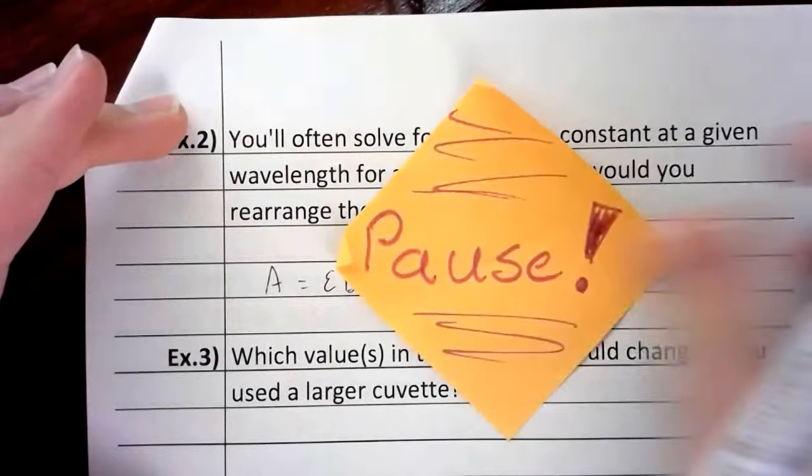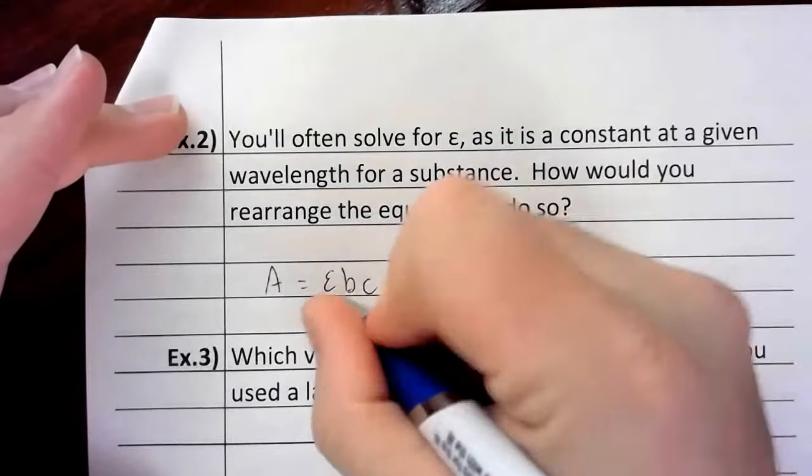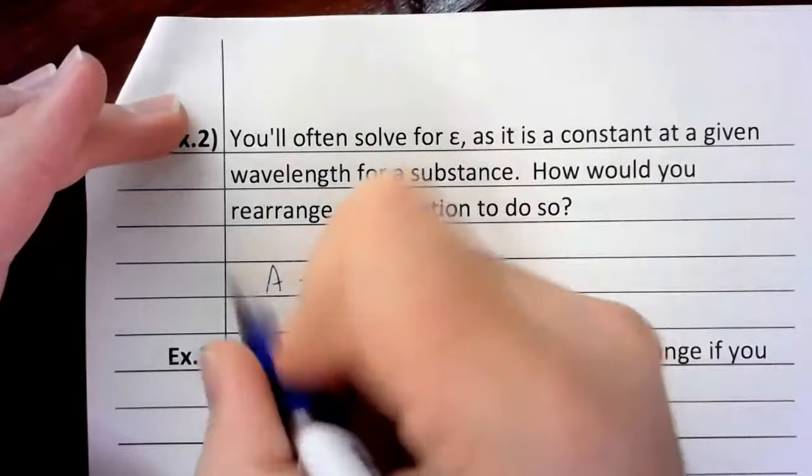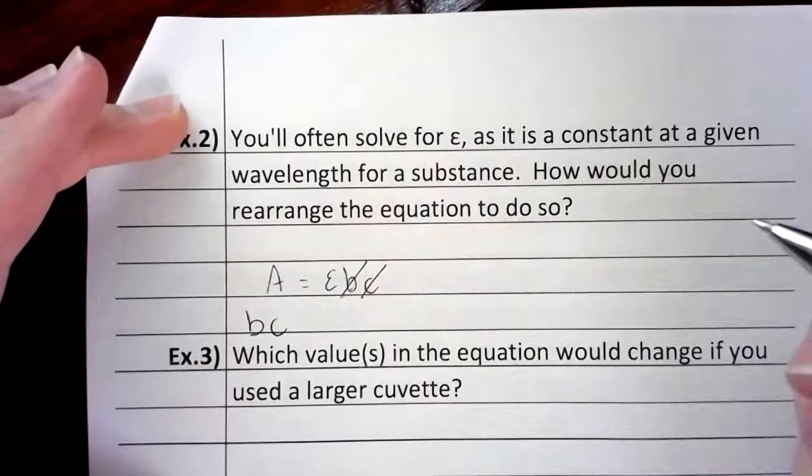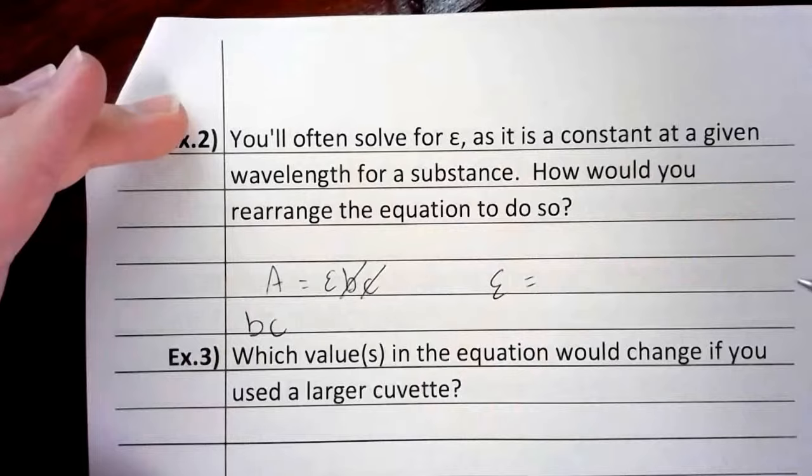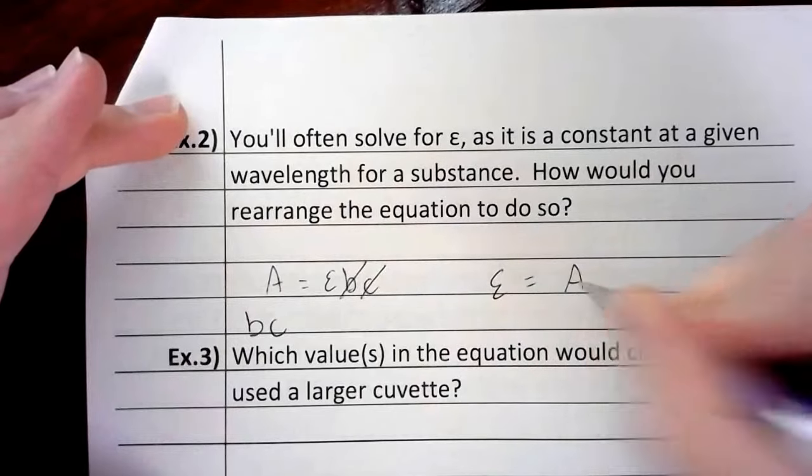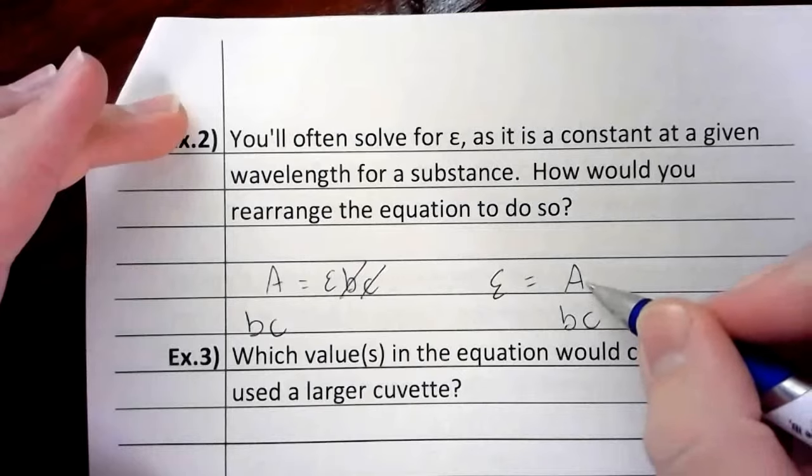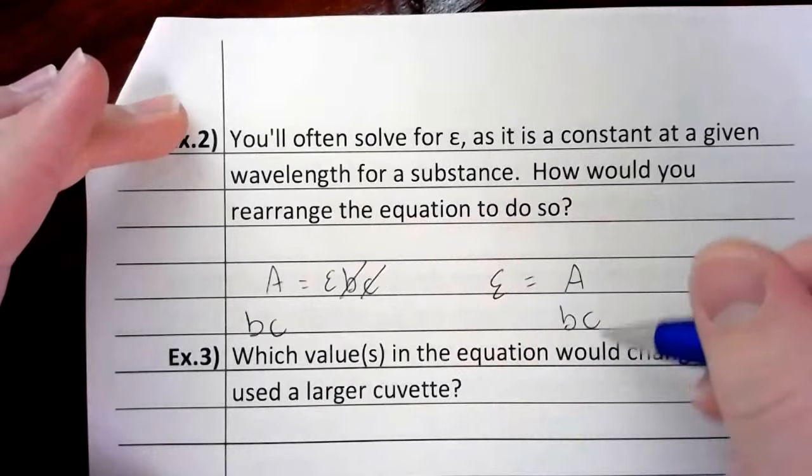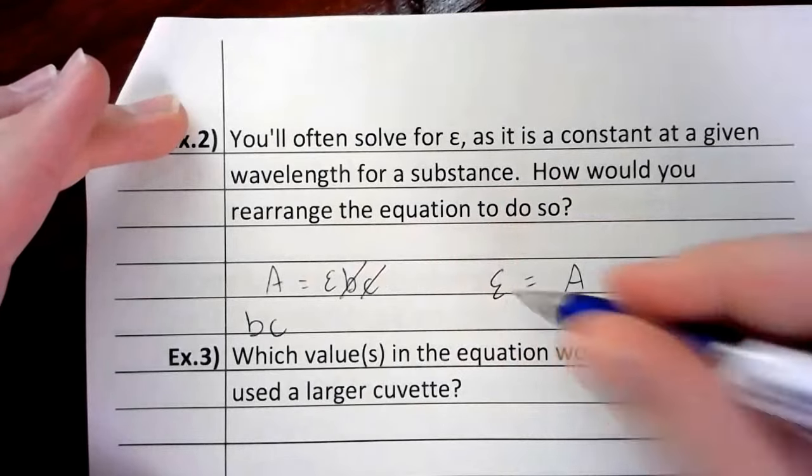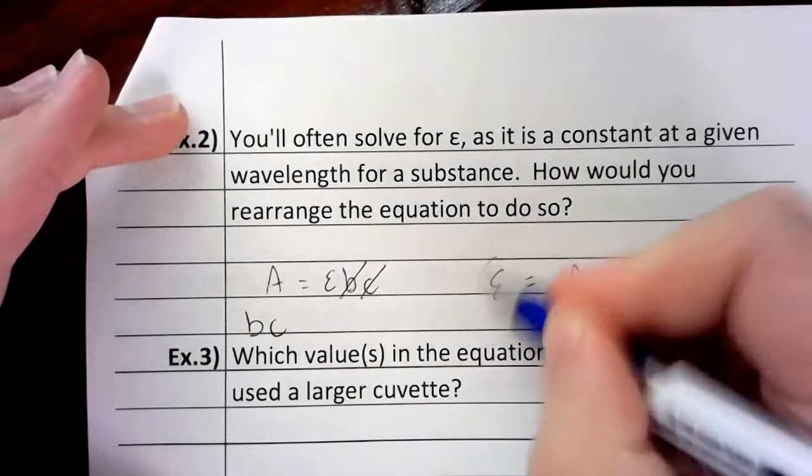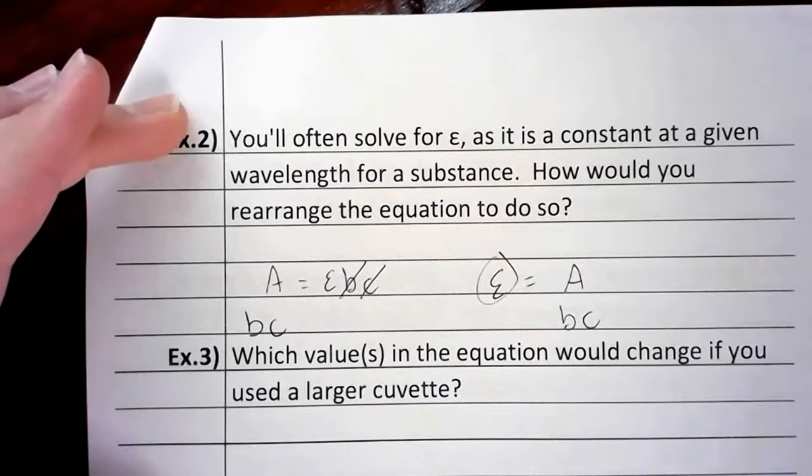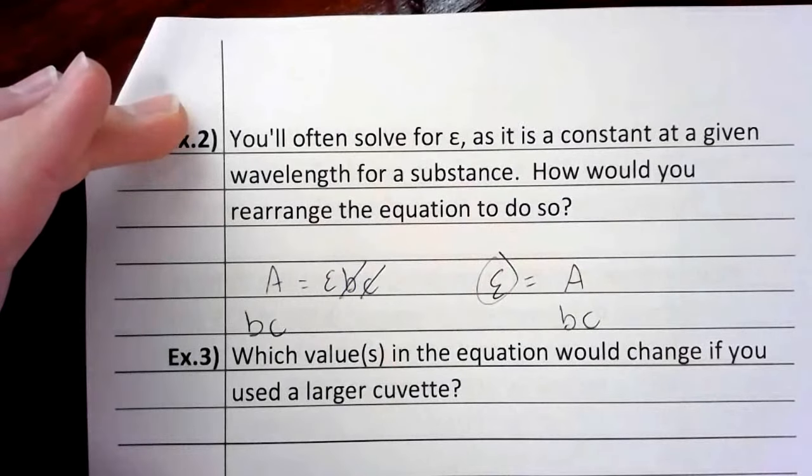Well, the first thing I do is I'd move the b and the c. They were both on top over here, so they'll end up on the bottom over here. So in the end, you end up with the molar extinction coefficient, epsilon, equals A over bc. Just like that. So if you know the absorbance, the path length is just one, and you know the concentration, then you also know the molar extinction coefficient. And once you have this, you can use it for anything else as long as you stay at that wavelength and as long as you're messing with the same chemical.